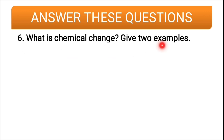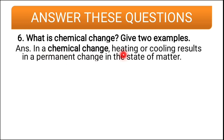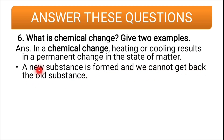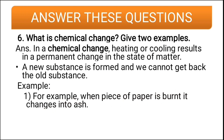Sixth question: what is a chemical change? Give two examples. In a chemical change, heating or cooling results in a permanent change — unlike physical change which is temporary. A new substance is formed and we cannot get back to the old substance. Examples: a piece of paper burnt into ashes — you cannot convert ash back to paper. Similarly, milk turning into curd — once milk turns into curd, you cannot turn it back into milk.